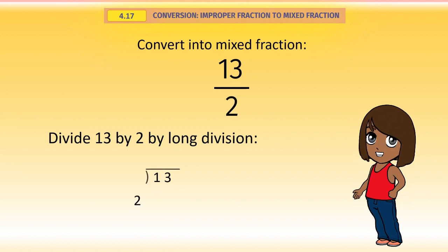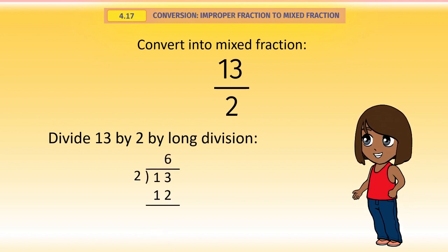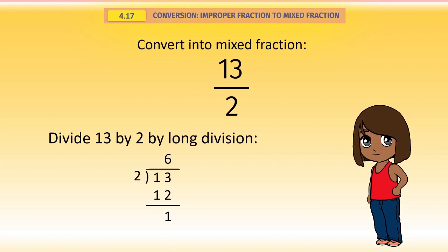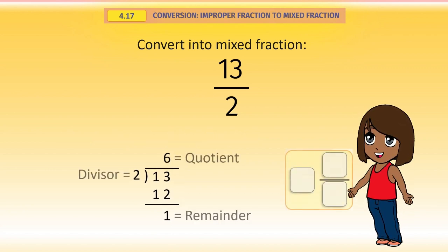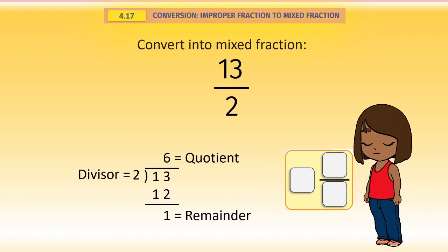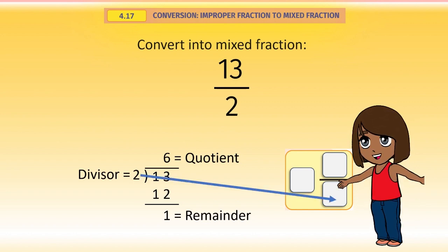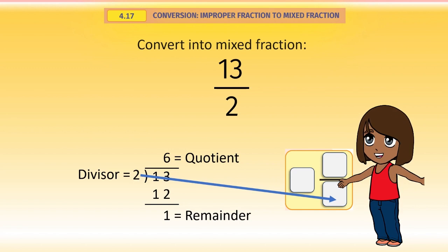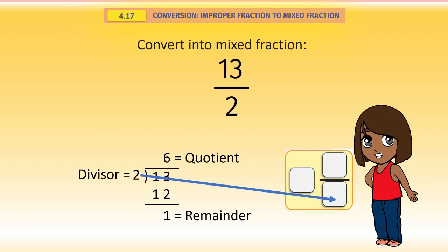The long division 13 by 2 gives us quotient 6, remainder 1, and the divisor of course is 2. We can use the results to get our mixed fraction. Remember, the denominator remains the same as in the improper fraction, it is the divisor.